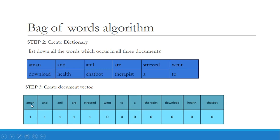Aman appeared once in document one. Anil also appeared only once, as did 'are' and 'stressed.' The remaining words are all zeros because they did not occur in document one. How many times a particular word occurs is the number you write. That is the document vector.